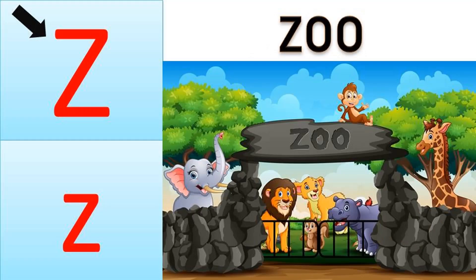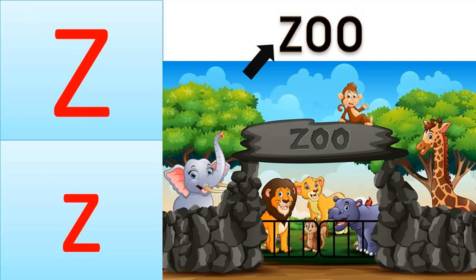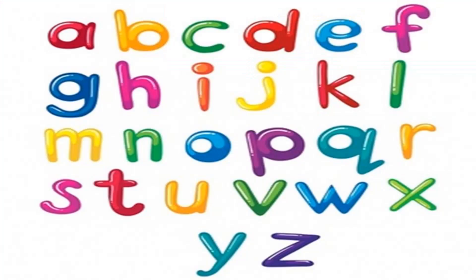This is capital Z. This is small z. Z for zoo. Z-O-O. Okay, children.